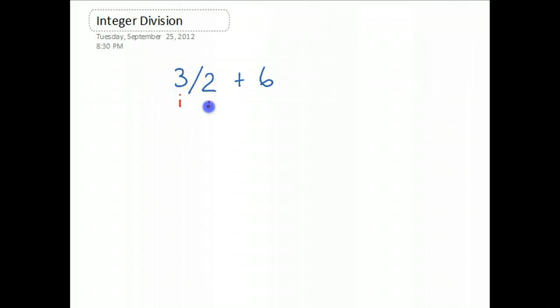We see 3 is an integer, 2 is an integer, and 6 is an integer. So 3 divided by 2, since they're both integers, that's going to result in a 1 because I'll chop off the decimal, plus 6. So now I see that this is an integer, 1, and this is an integer. So 1 plus 6 is 7, and the result is an integer.